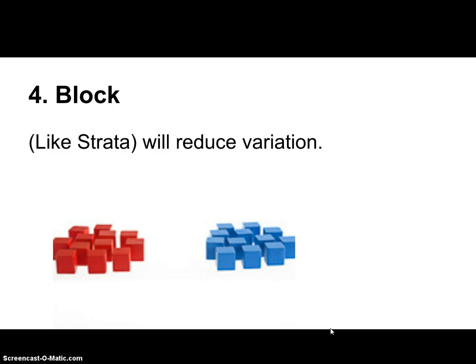Lastly, we'll look at blocking. Blocking is putting your participants into separate groups to help reduce variation that might occur within your sample. For example, if we are testing a new diet pill, we might want to block by females and males because they might react differently to the diet pill. So we separate them into female and male groups, and then from there further assign them into different treatment groups, because differences between men and women could create more variation in the data that could cause us to come to the wrong conclusion. So that's blocking.